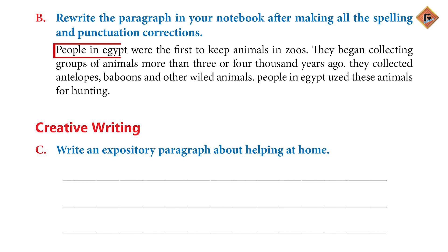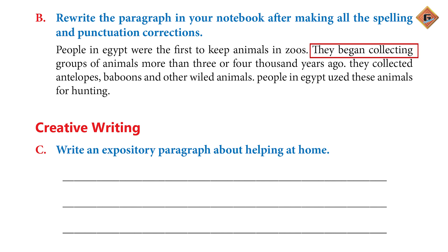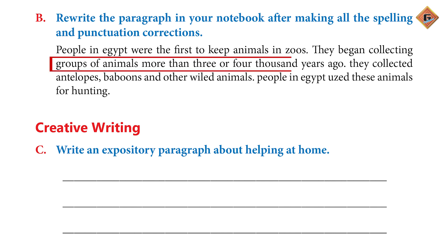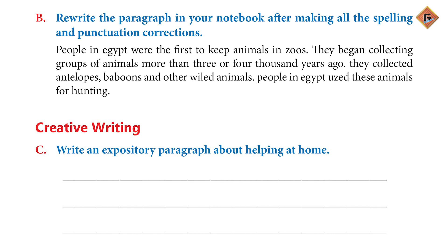People in Egypt were the first to keep animals in zoos. Egypt's capital is — full stop. They began collecting groups of animals more than three or four thousand years ago. They collected antelopes, baboons and other wild animals — full stop after 'animals'.